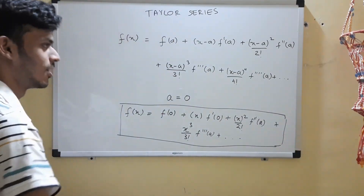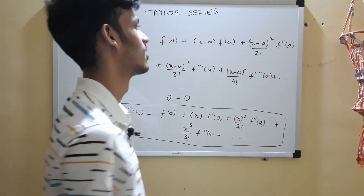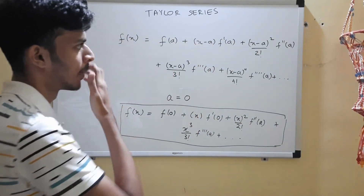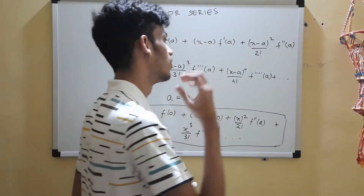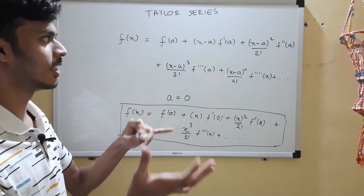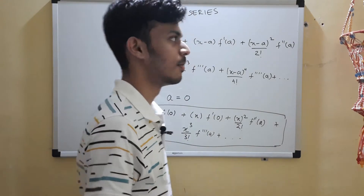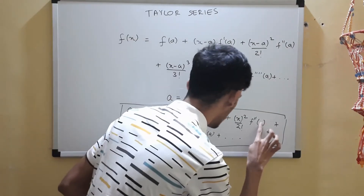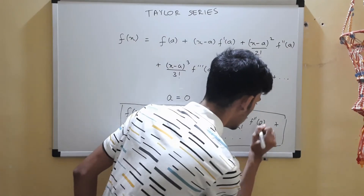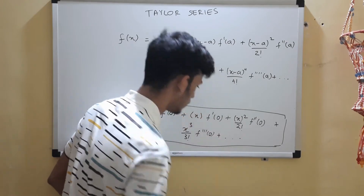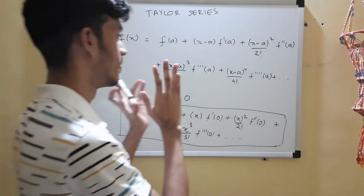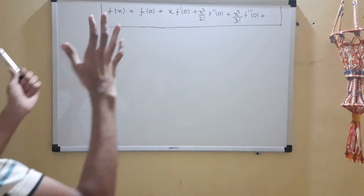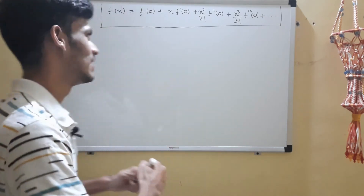This Maclaurin series can be used to derive each series in your syllabus in 30 to 60 seconds. The general Taylor series about an arbitrary point 'a' is useful if someone asks you for a series not in your syllabus, but the important one today is the Maclaurin series. You can note this formula down — take a screenshot if you like. Now let's try to find each of the series.